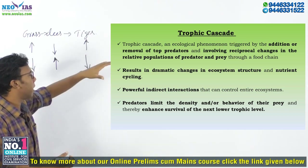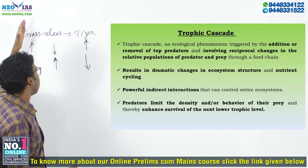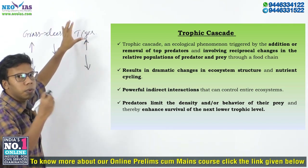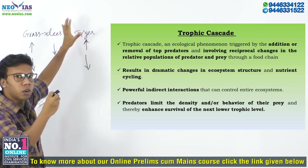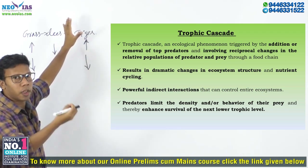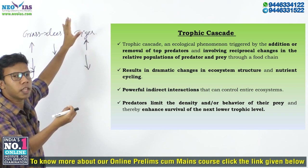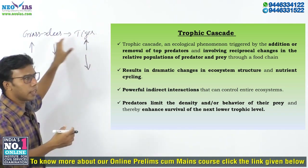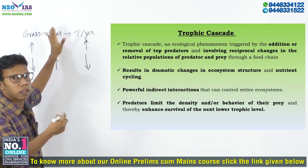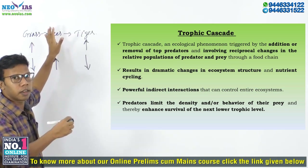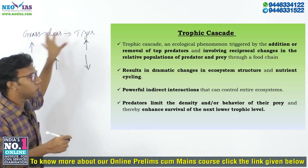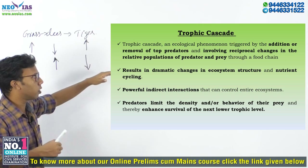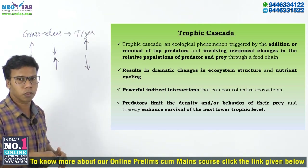Ecosystem will have a definite structure — Grass will be eaten by Deer, Deer will be eaten by Tiger, and they all have some proportionate numbers. We know about the pyramid of number, pyramid of biomass, and pyramid of energy. There is a definite relation between the species in an area with respect to their number, called the pyramid of number. The number will change if the Trophic Cascade happens, whereby it results in changes in the ecosystem structure.